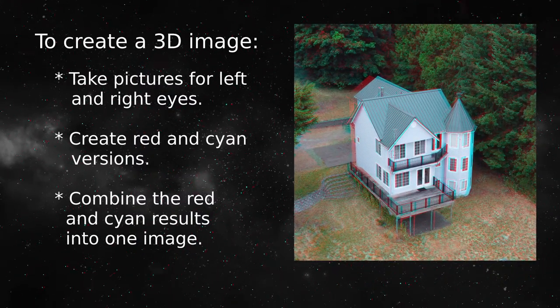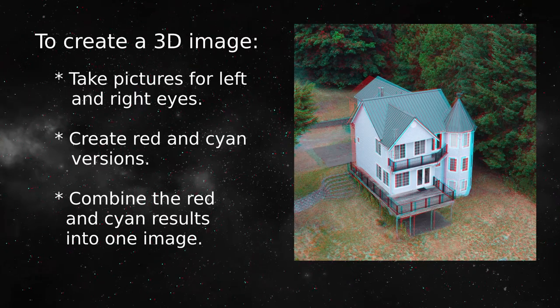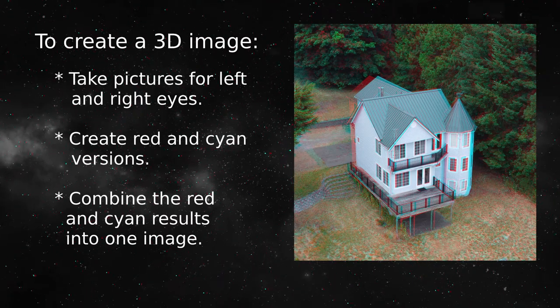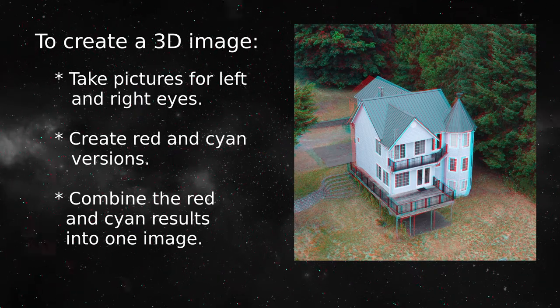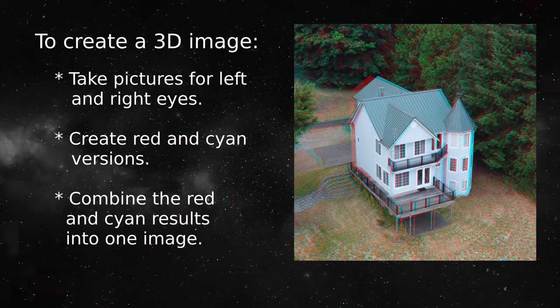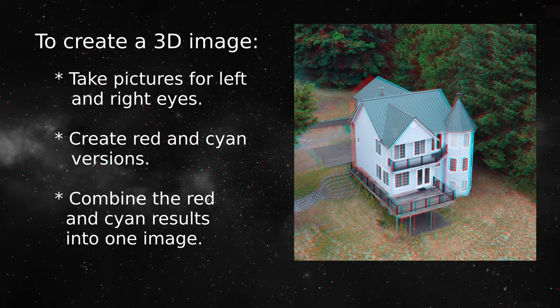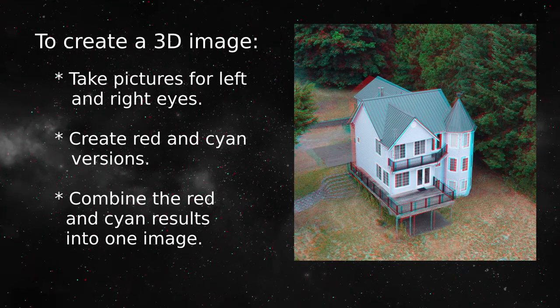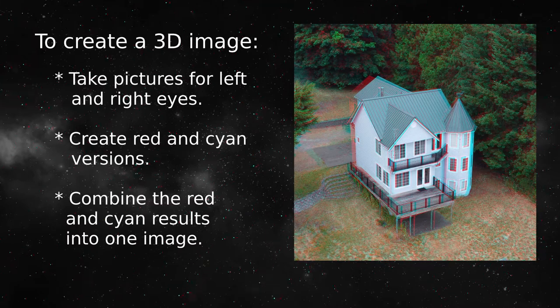If you think about it, you realize that the final anaglyphic image retains all the color and detail of the two original images, but in a way that directs all the red colors to the viewer's left eye and all the green and blue colors to the right. So the original image is intact, but converted to three dimensions.